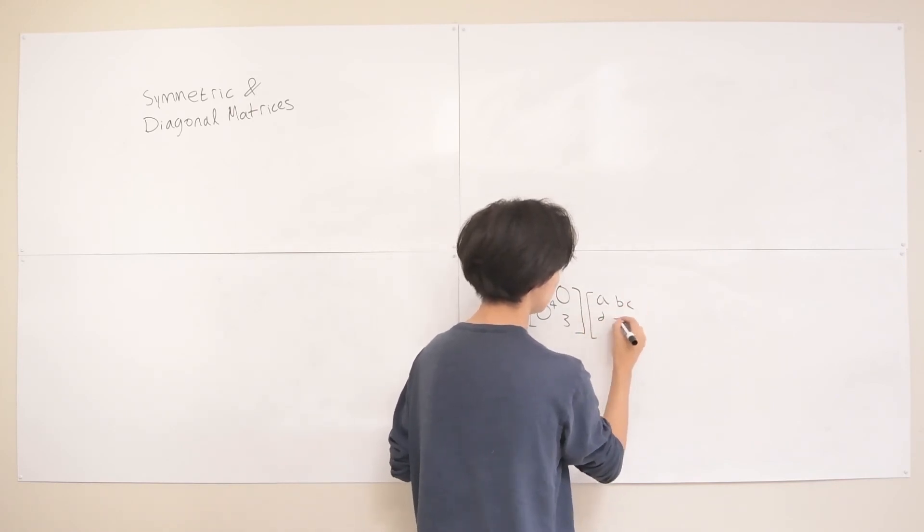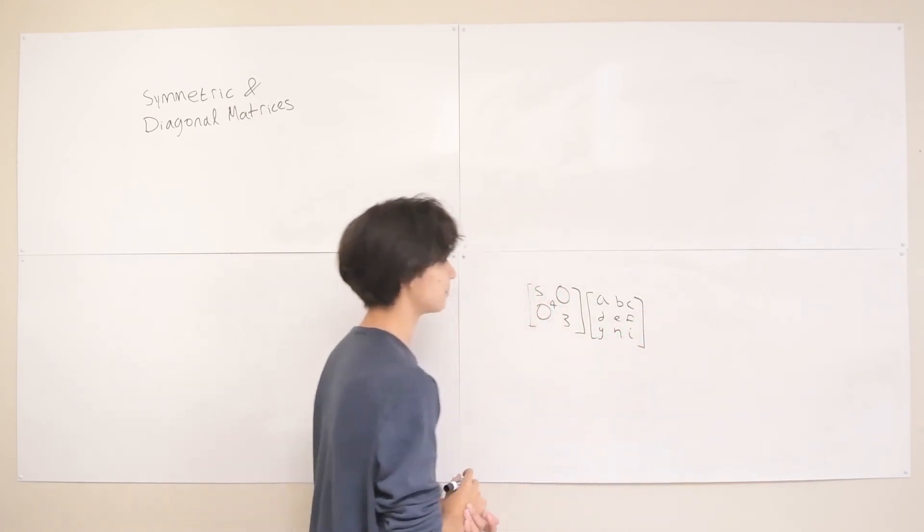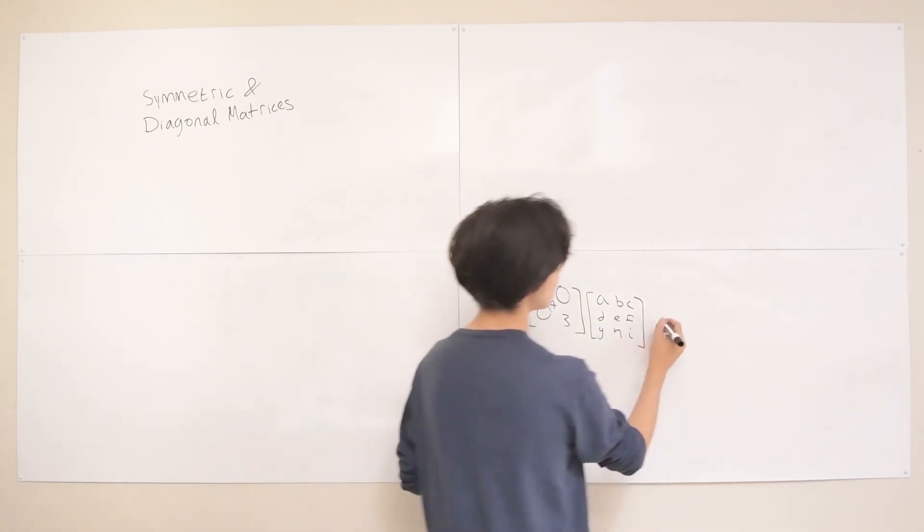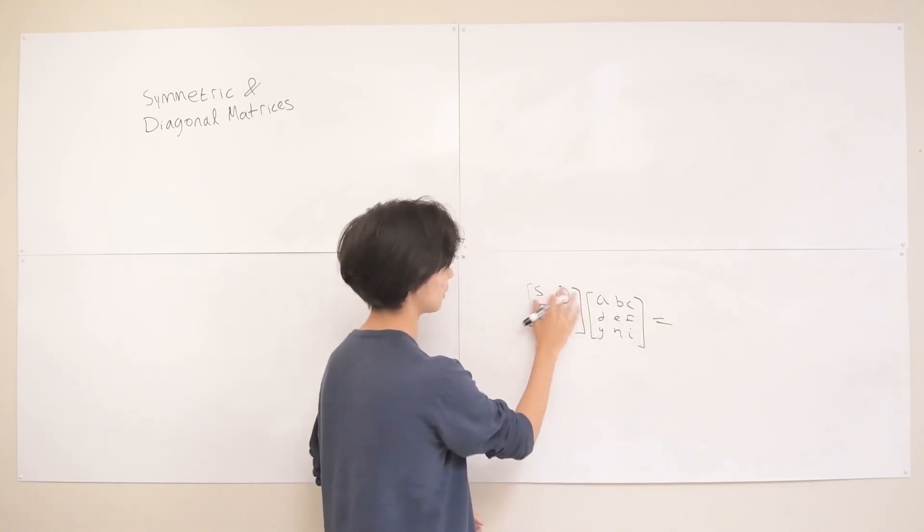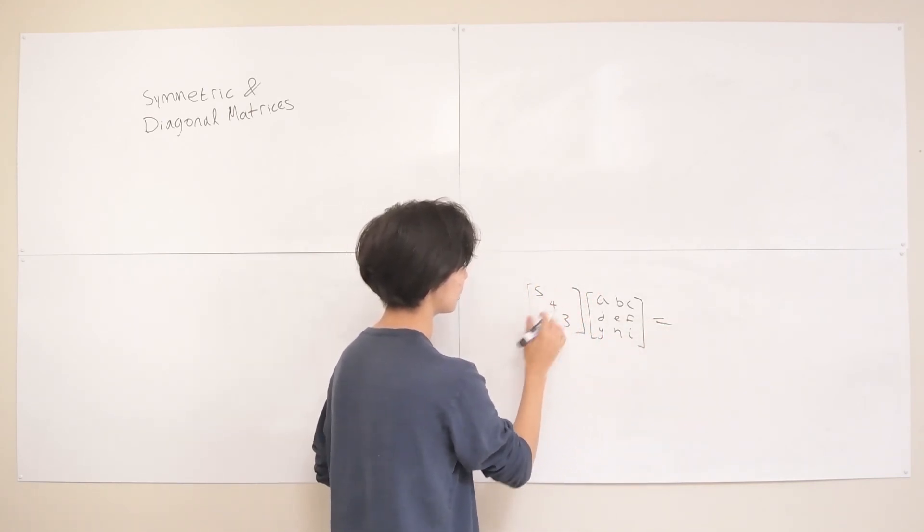And then we multiply this by some generic A, B, C, D, E, F, G, H, I. And that's our matrix there. So if we multiply these, you'll see that we, okay, you know what? I'm not going to be lazy. That's just going to make things more confusing. Something like this.